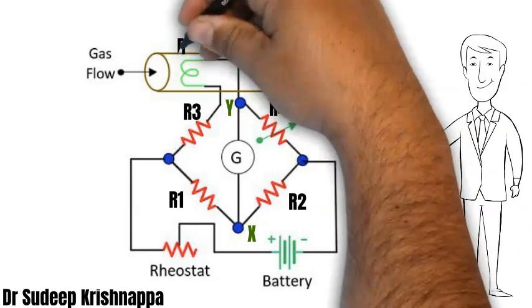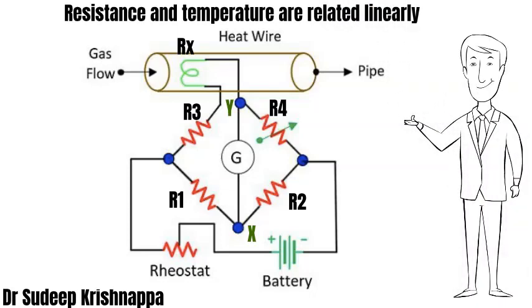When the bridge is balanced, there is no potential difference across points X and Y, so a voltmeter placed at position G would not record any deflection. In this system, R1 and R2 are known and fixed; R4 is known and can also be altered. A heating element placed in the path of gas flow will have a resistance Rx, which is determined by the temperature of the heating element. The sum of R3 and Rx represents the total resistance at position R3.